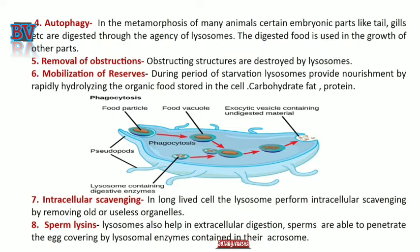Number 7 is intracellular scavenging: in long-lived cells, lysosomes perform intracellular scavenging by removing old or useless organelles. Next is sperm lysis: lysosomes also help in extracellular digestion; sperms are able to penetrate the egg covering by lysosomal enzymes in their acrosome. The lysosomes digest the outer covering of the egg.